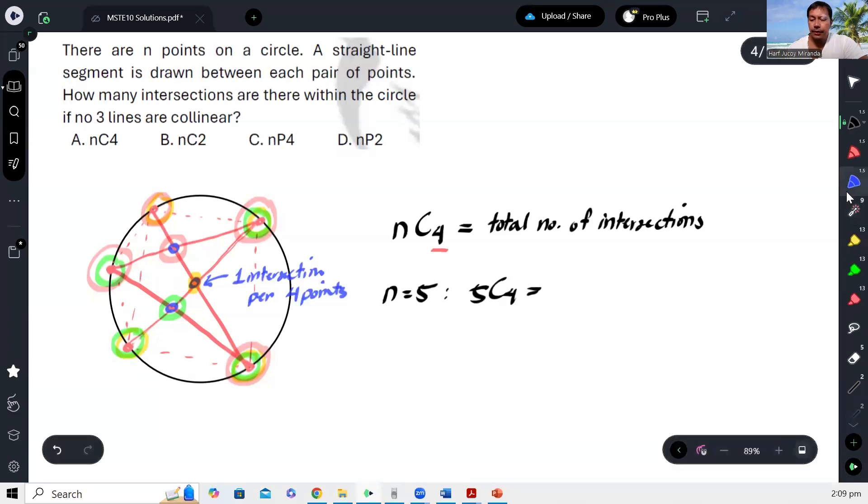Okay, yung 5 na yun is actually ito pa. Meron pa dito dalawa. If you have this line, so you can see we have two more here. Kaya meron tayong 1, 2, 3, 4, 5. Pero idea is the same, no? So lagay na lang din natin, so ito yung dalawa pa. So we have five intersections, no, using this line pa, no?